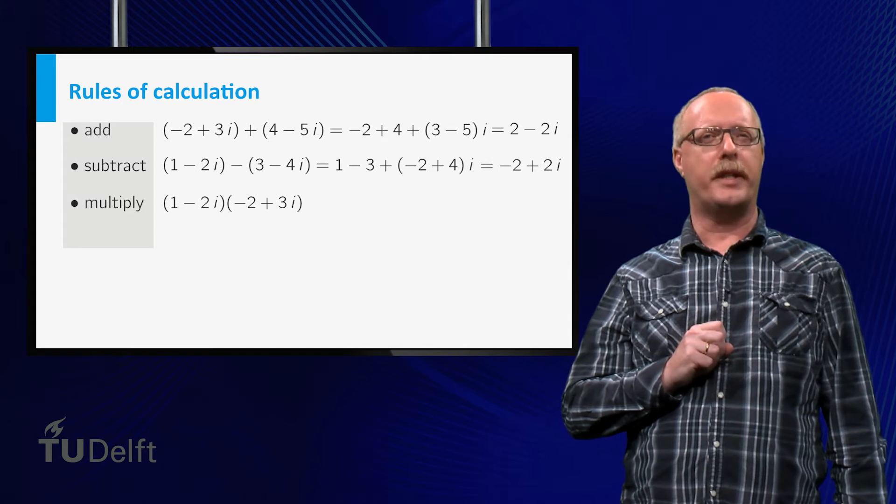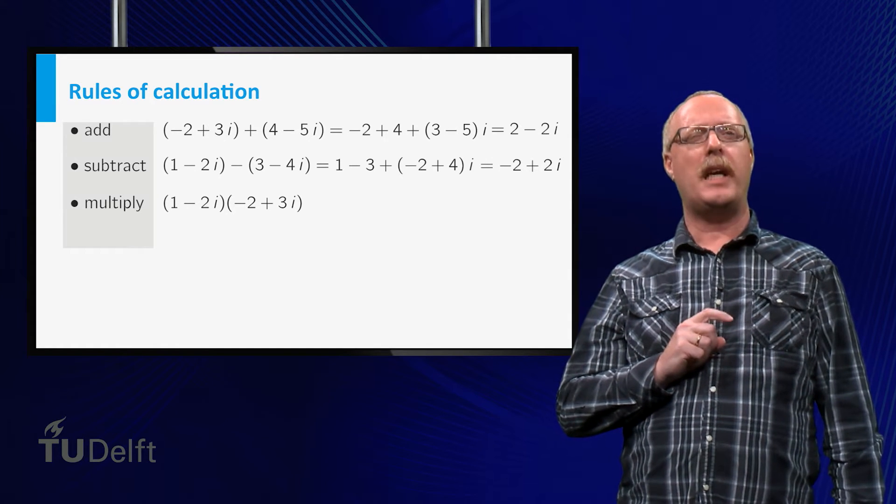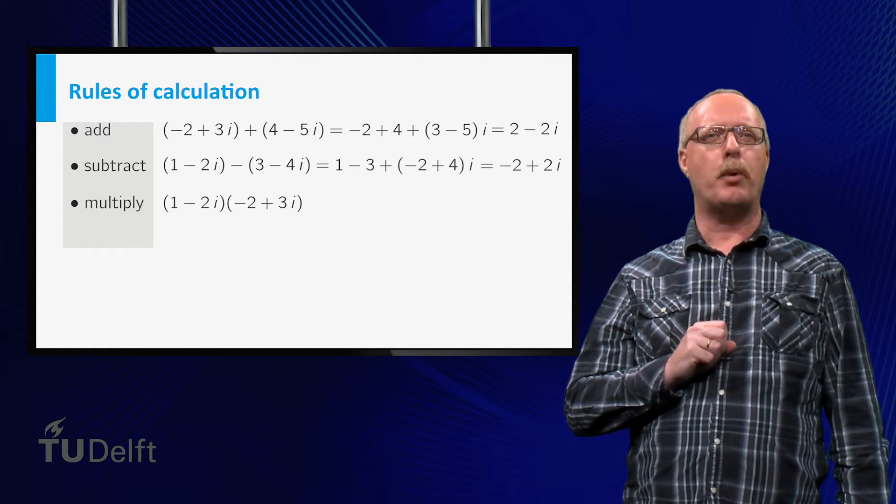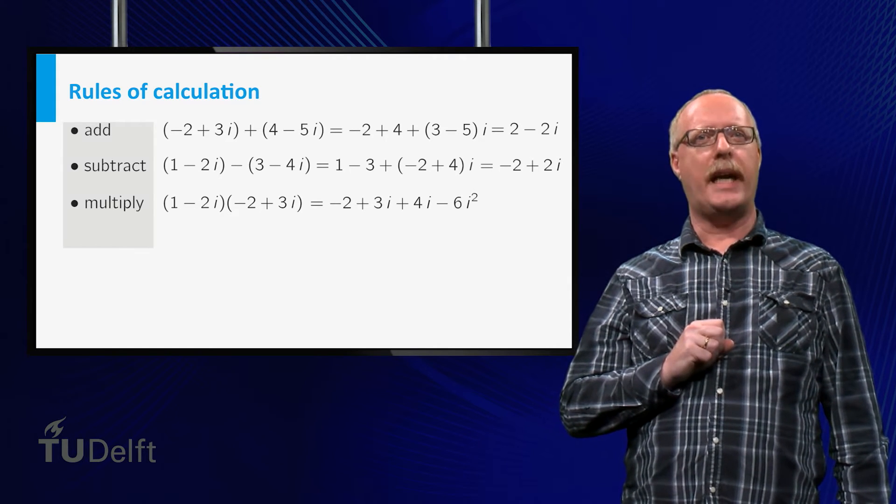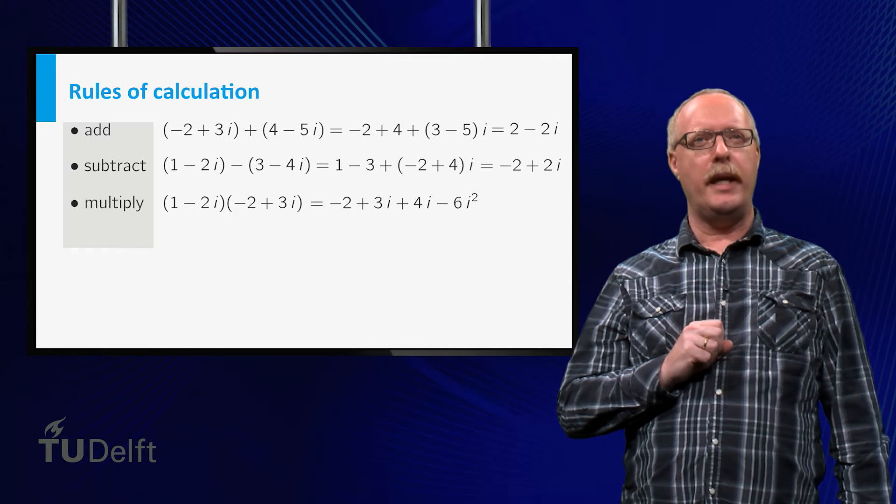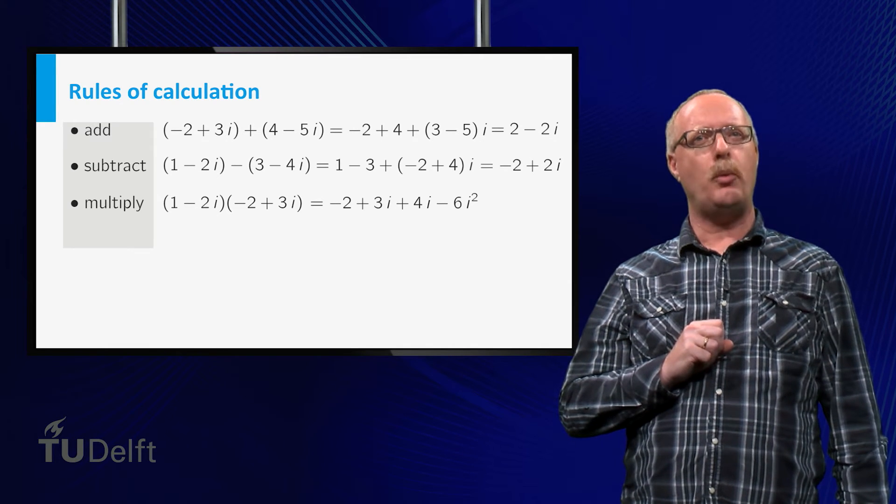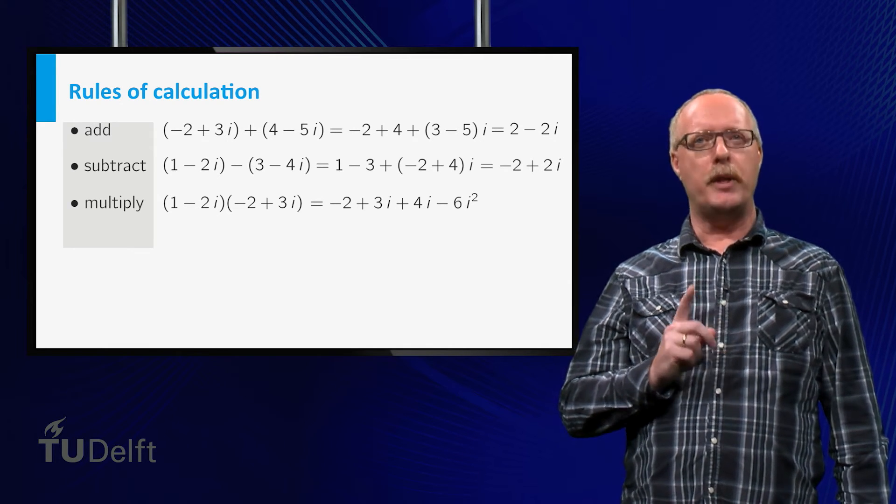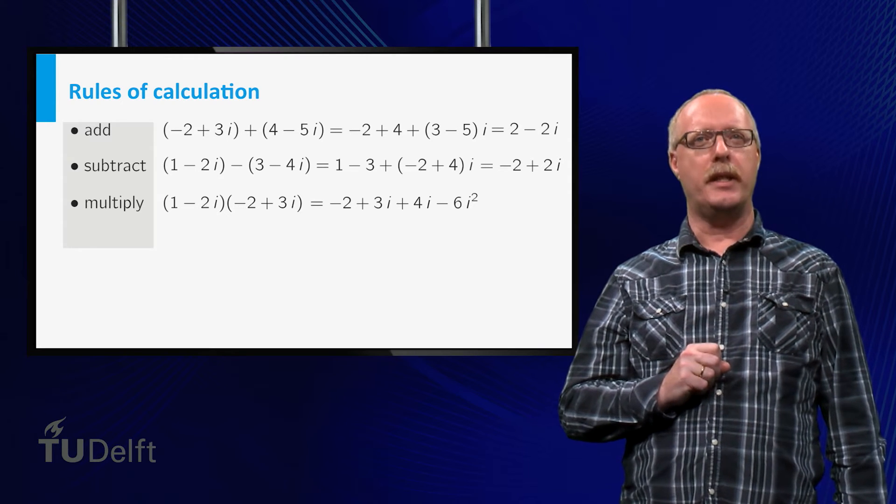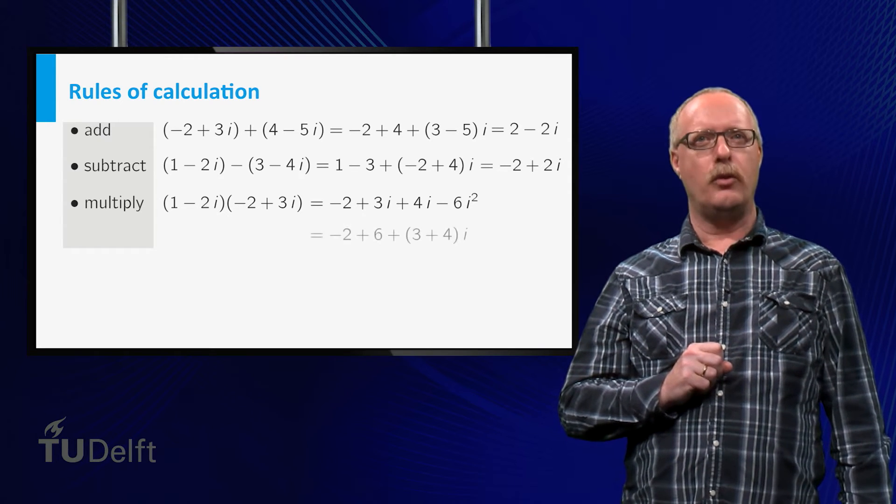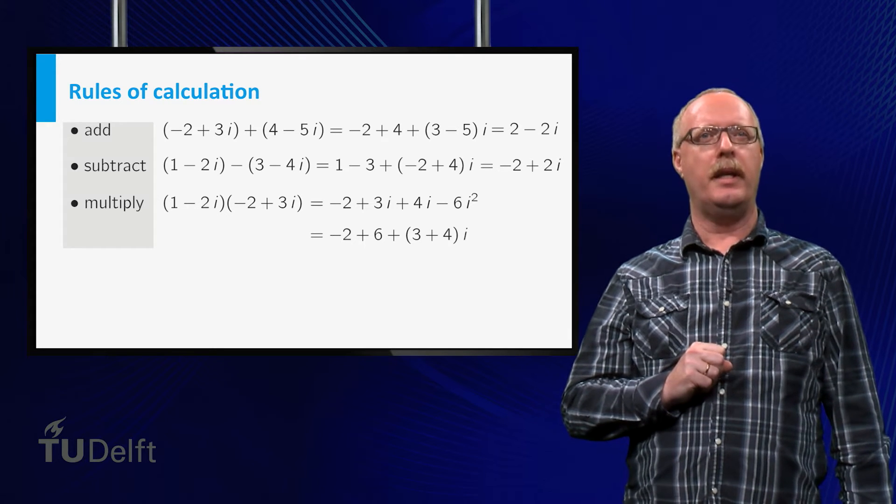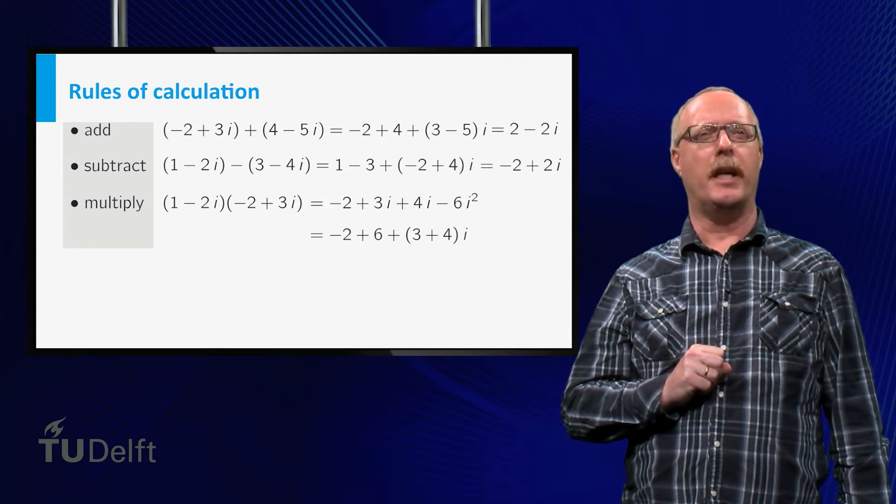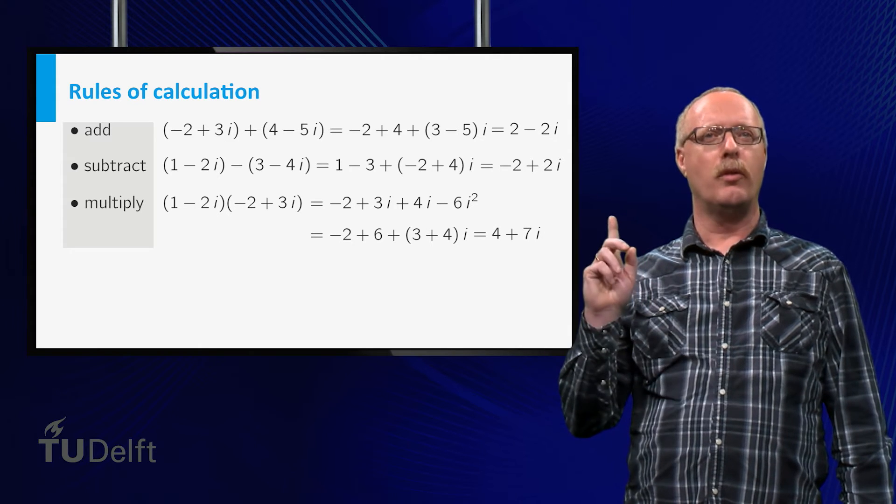Multiplication is somewhat more difficult. The multiplication is defined by expanding the product as usual. So here we get minus 2 plus 3i plus 4i minus 6i squared. Now we use the convention that i squared equals minus 1, to find minus 2 plus 6 for the real part, and 3 plus 4 for the imaginary part, which yields 4 plus 7i.